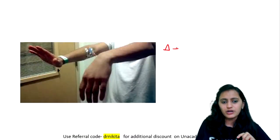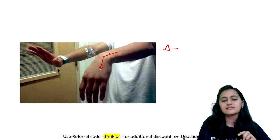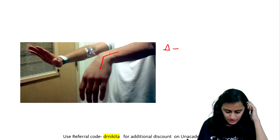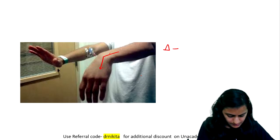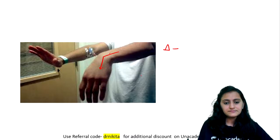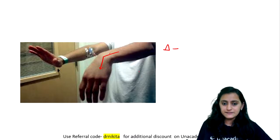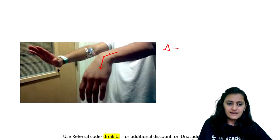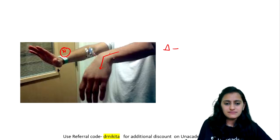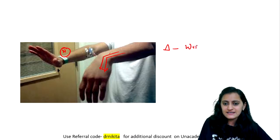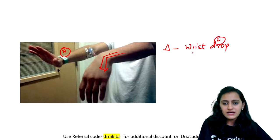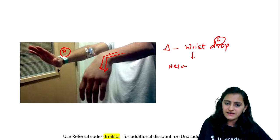Next one. First make a diagnosis — what do you see? What has happened to this hand? This is your normal upper limb and this is the abnormal. Absolutely right — this is wrist drop. You see left wrist drop here. Now tell me which nerve is affected. Wrist drop is seen in which nerve palsy? We have seen the cheat code to remember for the upper limb: Dr. Kuma. Wrist drop is seen in radial nerve palsy.